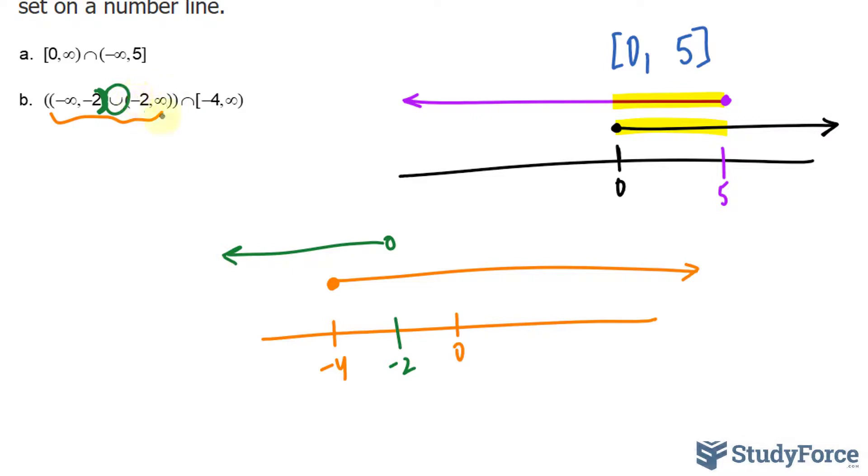What about negative two and positive infinity? Well, that's the same thing, but going that way. So it's the union between these two. So that means everything from negative infinity to positive infinity, but not including these two.